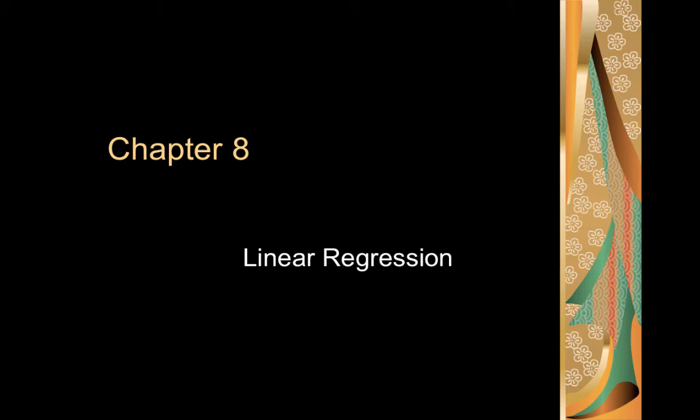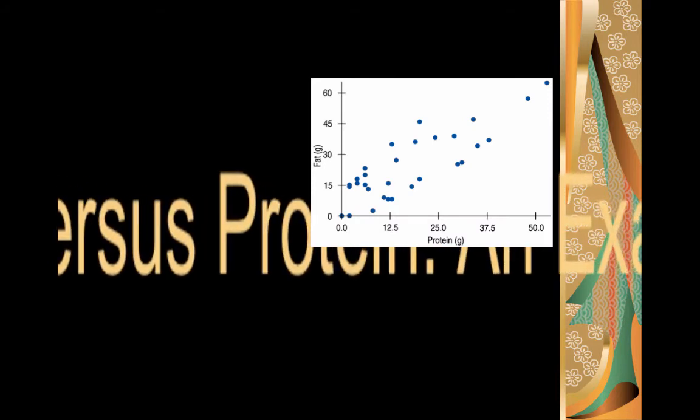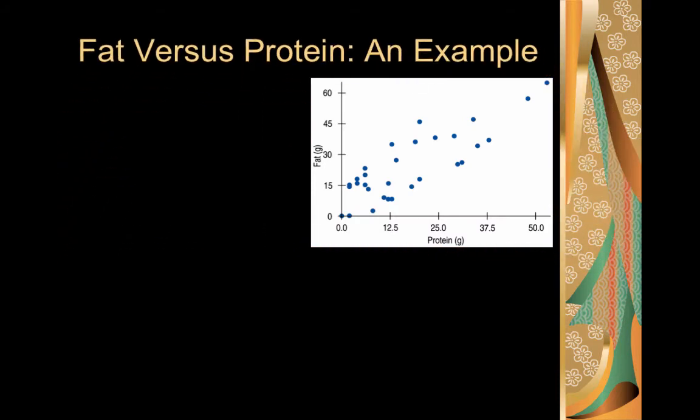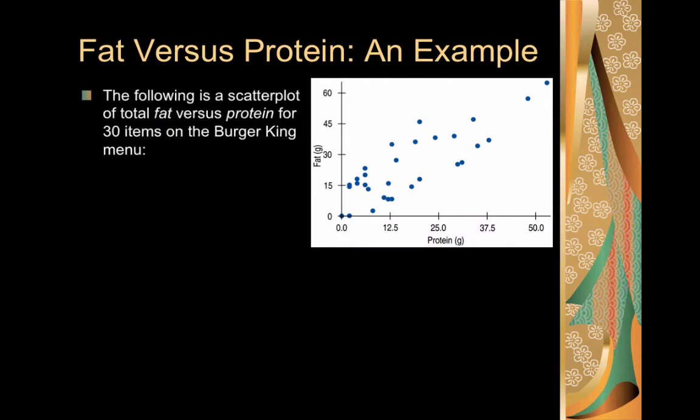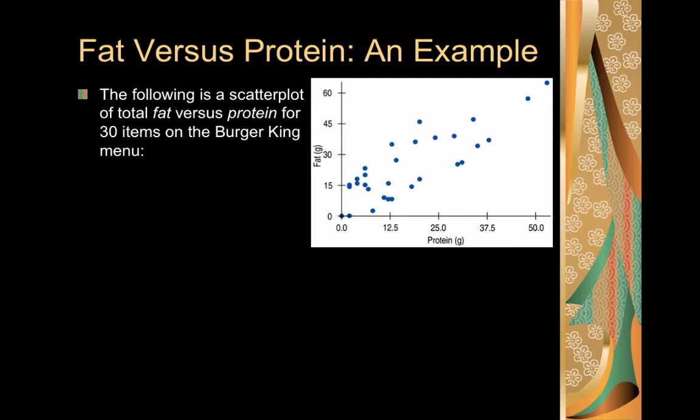We're starting chapter 8 tonight, which is about linear regression, and we're going to start with an example. Our example deals with fat versus protein for different items on Burger King's menu.